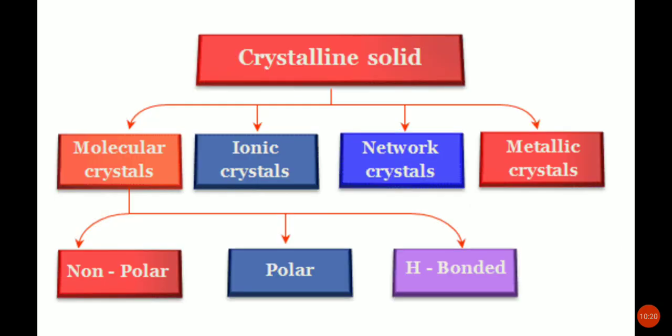Now we can see the classification of crystalline solids. Crystalline solids are classified into four main categories: molecular crystals, ionic crystals, network or covalent crystals, and metallic crystals. Molecular crystals are again classified into non-polar, polar, and hydrogen-bonded molecular solids.